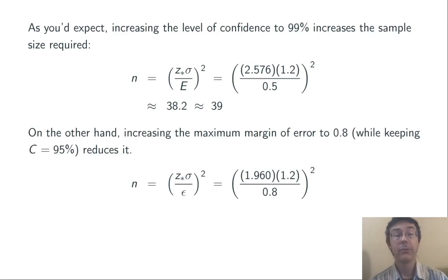On the other hand, if we're going to increase the margin of error, for example to 0.8, while keeping everything else the same, that's going to reduce the sample size we need. If we're okay with a larger margin of error, we don't need as large a sample. In this case, increasing the margin of error to 0.8 reduces the sample size needed all the way down to 9.